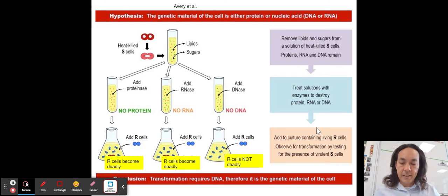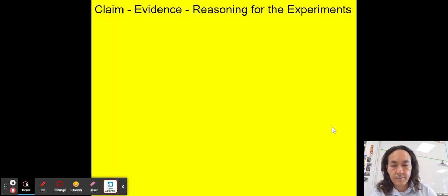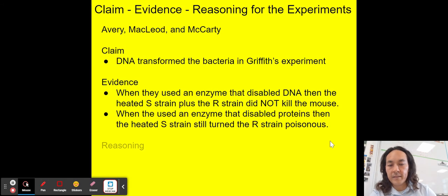This one, Avery McLeod and McCarty dealt with, well, what is that transforming factor? And they looked at proteins, RNA, and DNA. So this is a really important experiment. So go ahead and pause the video and look at this graphic and see if you can do claim evidence reasoning.